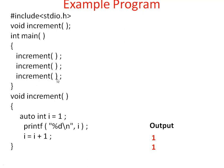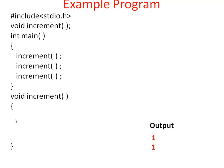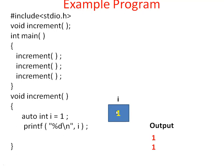Next time, the increment function is called a third time. Again the function increment is executed freshly. Once again this statement is executed as a fresh statement — auto int i = 1. Freshly memory is allocated for i and the value 1 will be stored in the memory location. Then it prints the i value — the current value of i is 1, so 1 is printed on the screen. Then i = i + 1, i value becomes 2. End of the function is reached. When control leaves this function, memory for i will be removed. Control goes back to end of main and the program terminates. So on the output screen you can see 1, 1, 1.